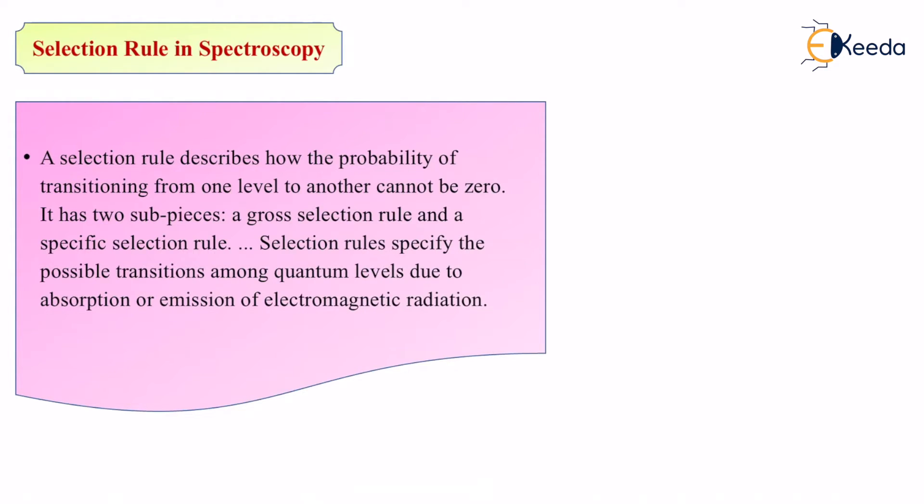Whenever electromagnetic radiation comes in contact with matter, that matter contains atoms. Those atoms will either absorb or emit the electromagnetic radiation. When absorption or emission of electromagnetic radiation takes place, that entire process is known as spectroscopy.